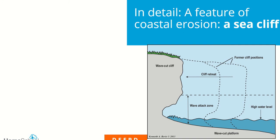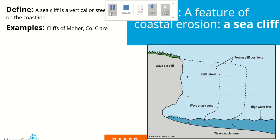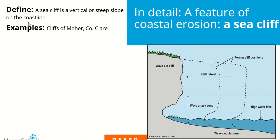Think of the Cliffs of Moher in County Clare. If you were to give a simple definition of what they are, you might say it's a vertical drop found along the coast — and you'd be right. So: a sea cliff is a vertical drop or steep slope on the coastline. Standing at the top of this cliff and looking down, you would see a steep vertical drop. For an example, give the Cliffs of Moher in County Clare — that's the best Irish example — or the Cliffs of Dover in the UK.